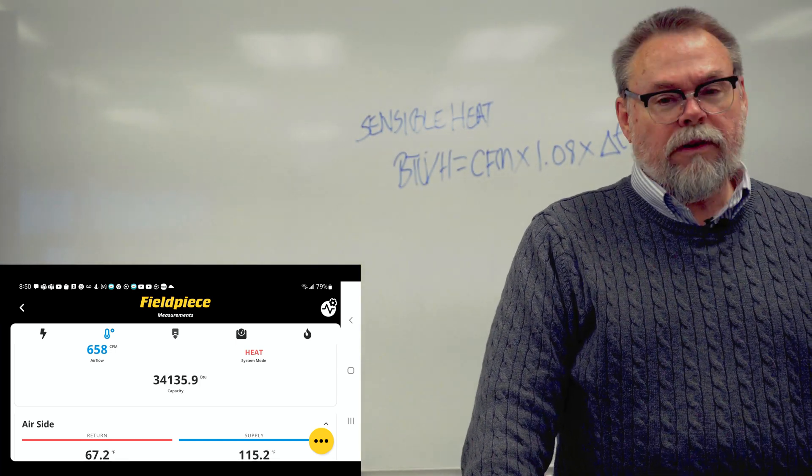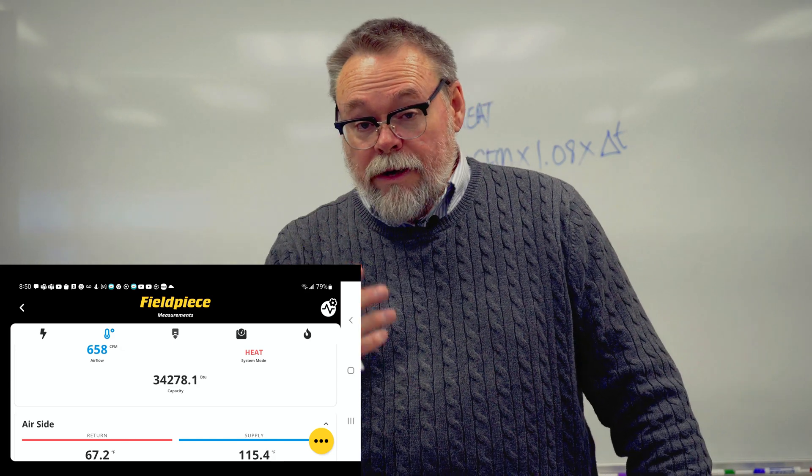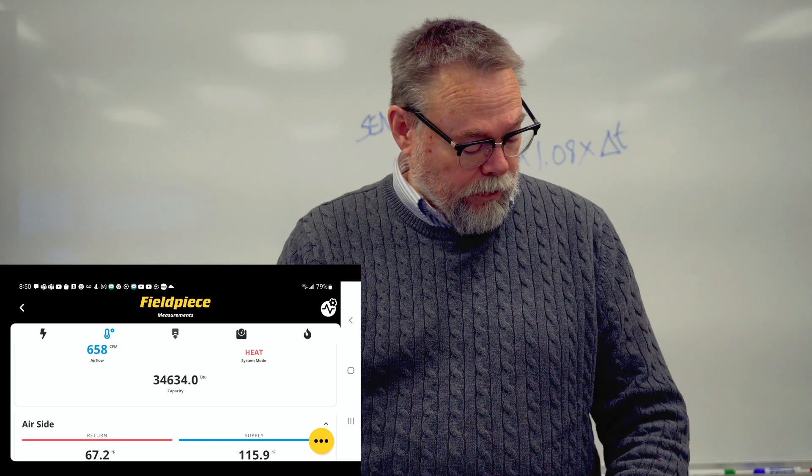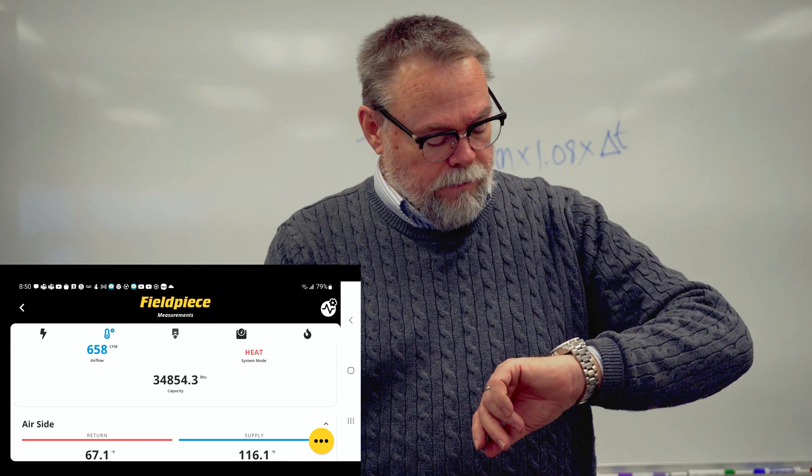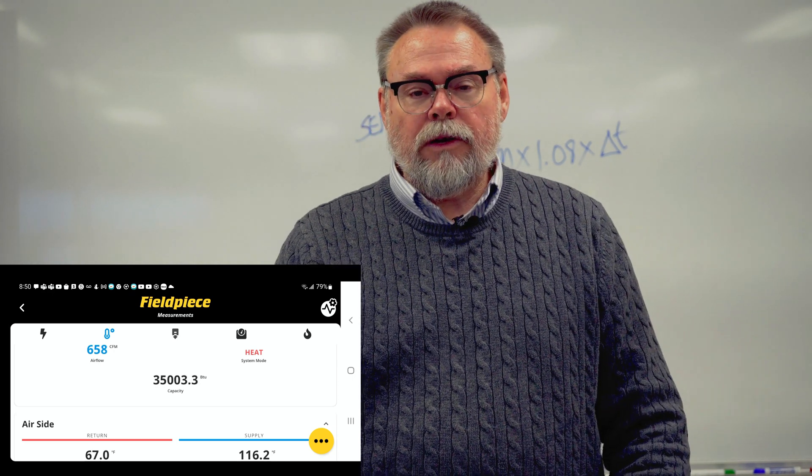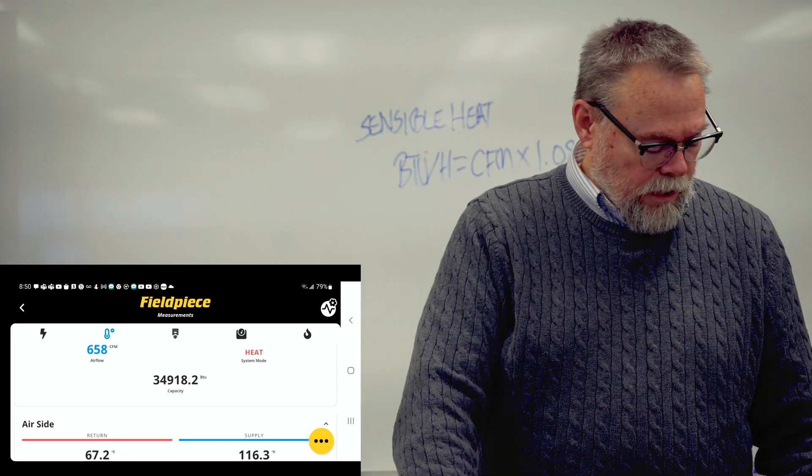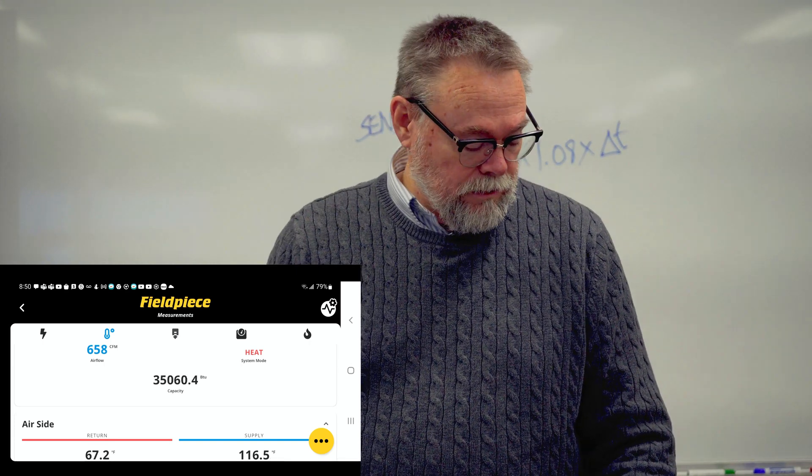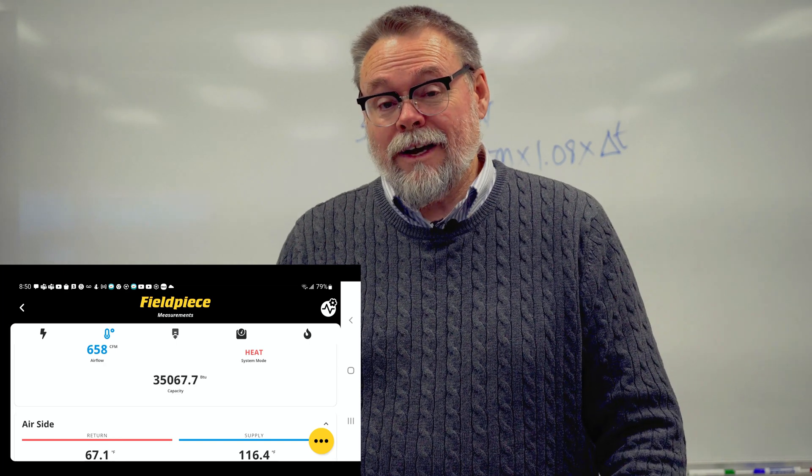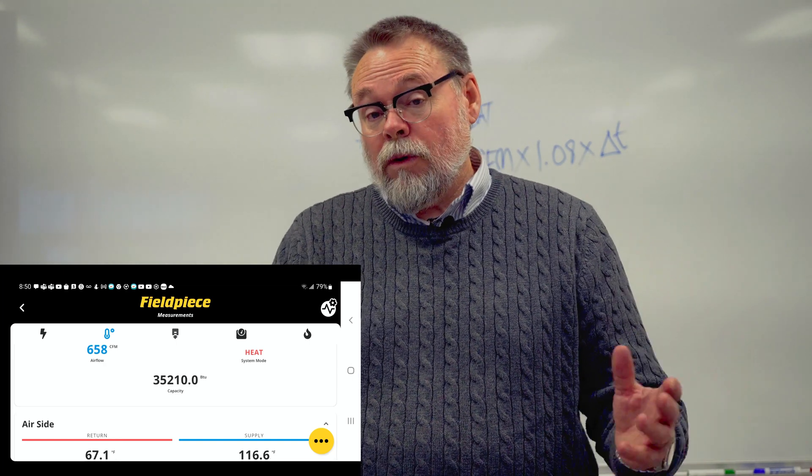Our BTUs jumped up. We're at 34,000 and climbing. So we're getting right where we're supposed to be. That's exactly what you want. We're coming up on nine minutes now. We'll give it another minute or two here. 34,008, 35,000. Looks like we're going to hit our 36,000, which is just perfect. That's exactly what we're supposed to be.